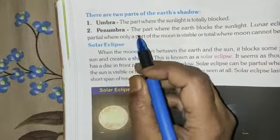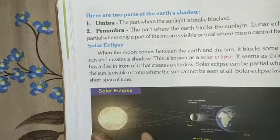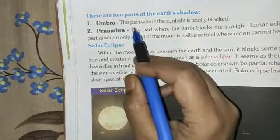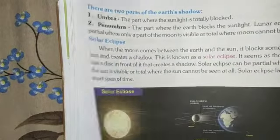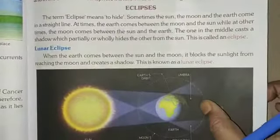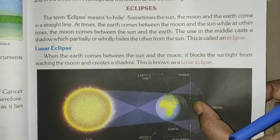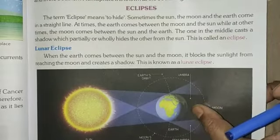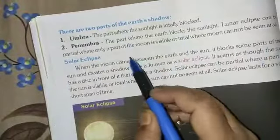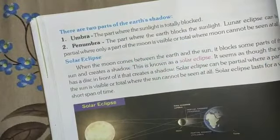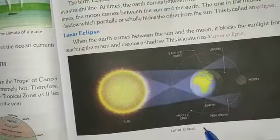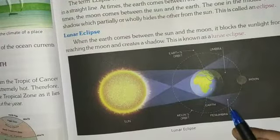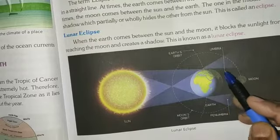There are two parts of the earth's shadow. The first is umbra — the part where the sunlight is totally blocked. Here, you can see this path is totally blocked; this is umbra. And penumbra is the part where the earth partially blocks the sunlight. See here — this is penumbra, and this is umbra.